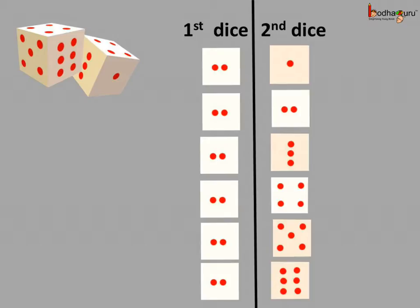Now, suppose 2 comes on the first dice and any of the 6 numbers may come on the second dice. That is, 1, 2, 3, 4, 5 or 6. So, there could be 6 different results like (2,1), (2,2), (2,3), (2,4), (2,5) or (2,6).